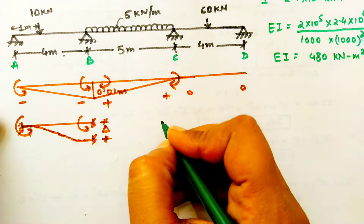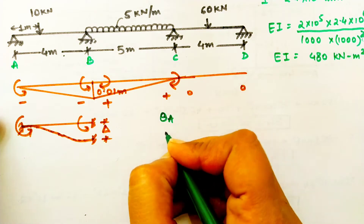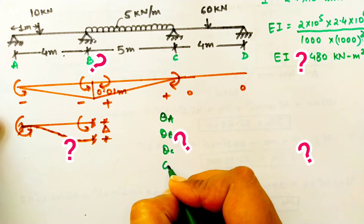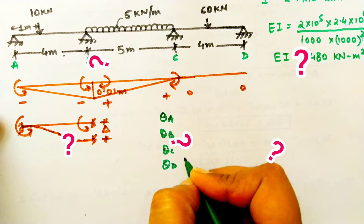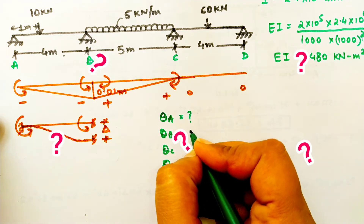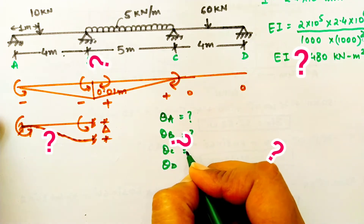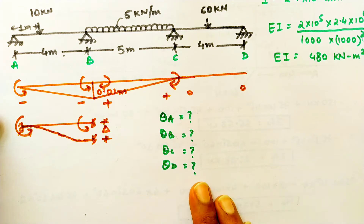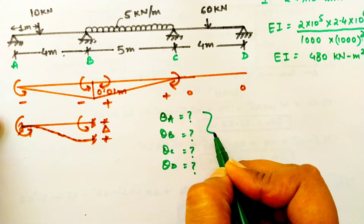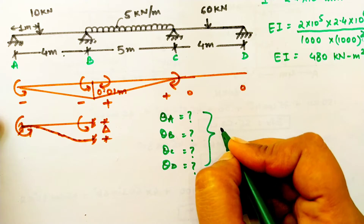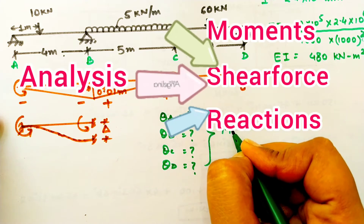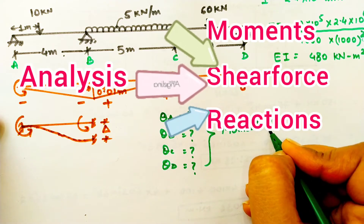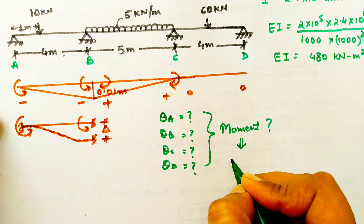The next step is finding out the unknowns in this beam. Since all are pin joints, these are the probable unknowns — we have four slopes which are unknown to us. Analyzing a beam means finding out the reactions, shear force, and moment.